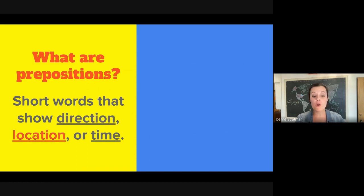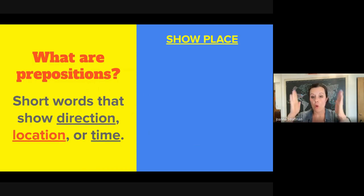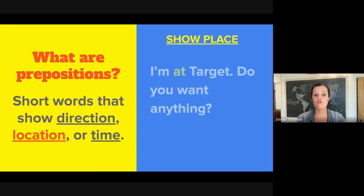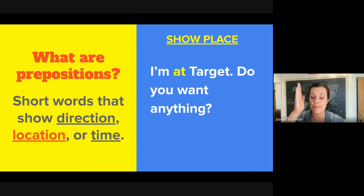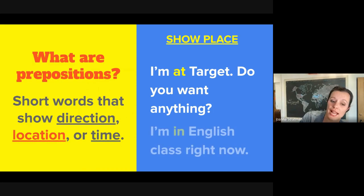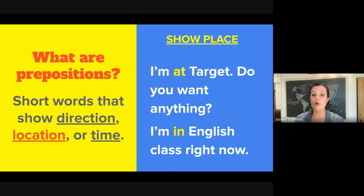We also have prepositions of location. These prepositions show place — the exact location of where something is happening. For example, maybe I am on the phone and I say, "I'm at Target. Do you want anything?" The preposition "at" is talking about a specific place or location: Target. In a similar way, "I'm in English class right now" — "in" shows that you are inside the class. It shows your location.